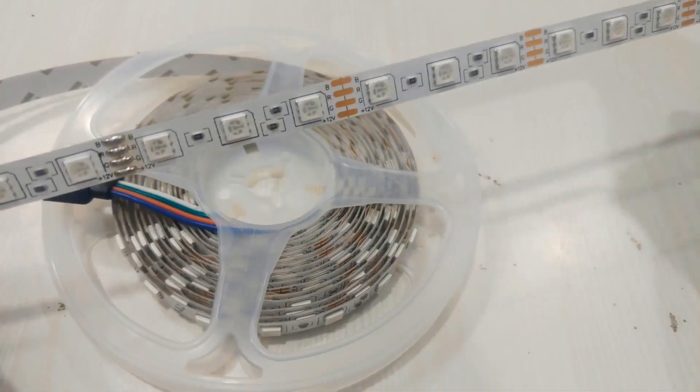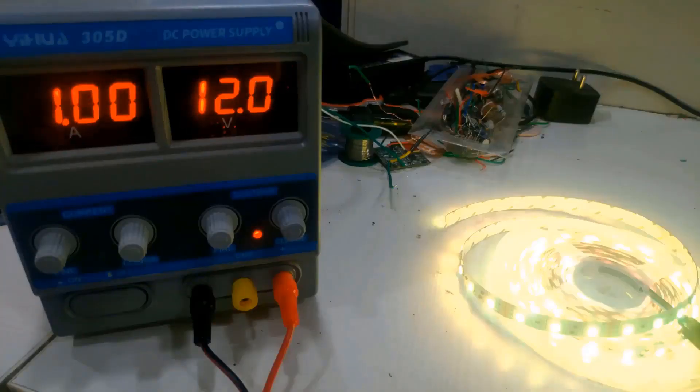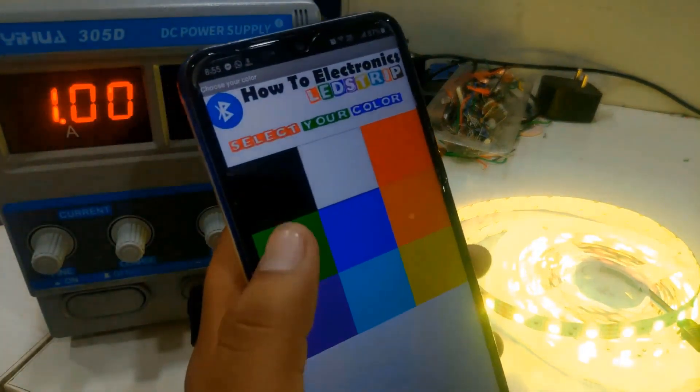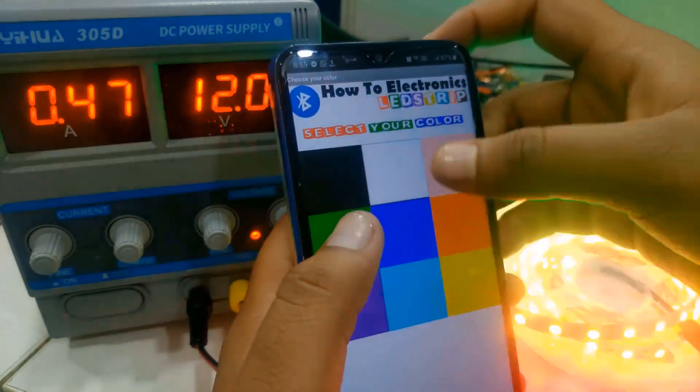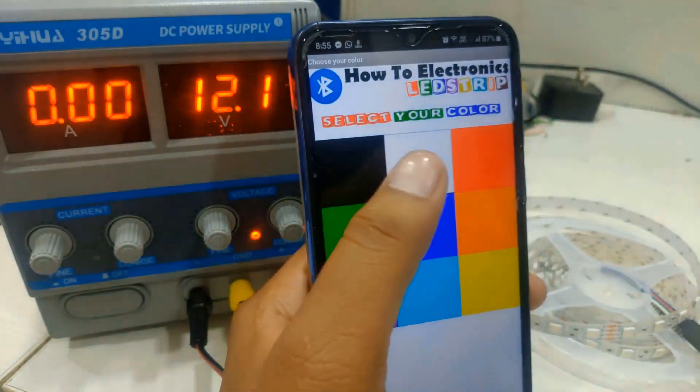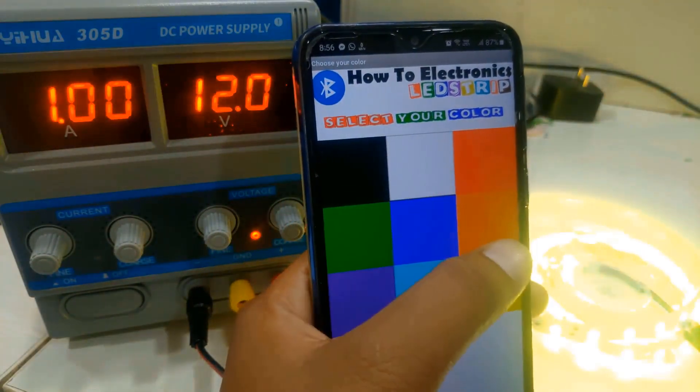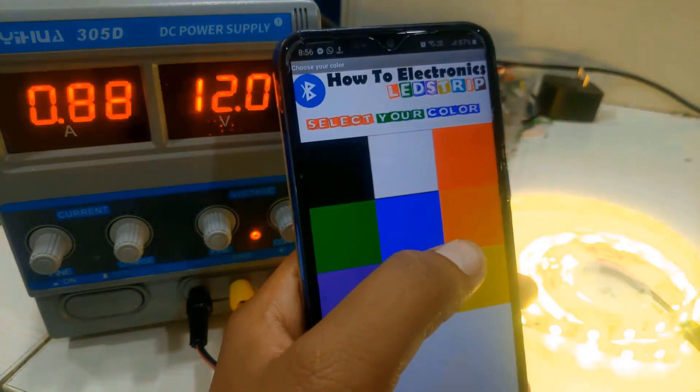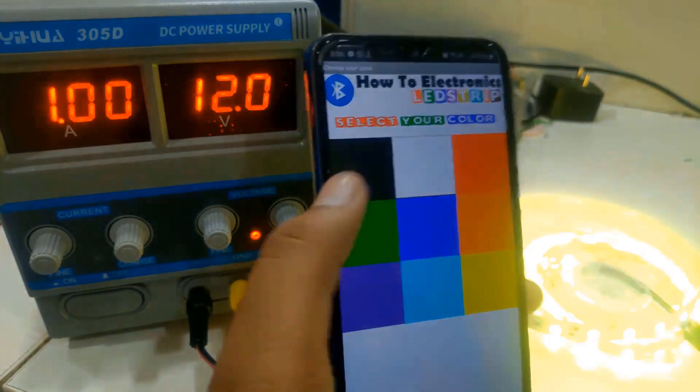Now let's check the power consumption of this LED strip. With different colors, the power consumption will be different. With white color, the power consumption is around 1 ampere. With red it's 600 milliampere, and with green, orange, blue, light blue, yellow, and purple, the power consumption is different as you can see here.